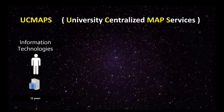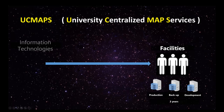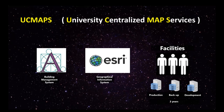UCMAPS, which stands for University Centralized Map Services, is about 15 years old. It started 12 years ago in the information technology side with one person and one computer. We grew from that and moved to facilities the last three years, with three people and a full enterprise system with production, backup, and development servers and databases. We're not a large group and we don't have a lot of money, so I'm going to show how we developed all these things on kind of a shoestring budget. The software we use includes a building management system called Arcibus and primarily our GIS product, which is Esri.